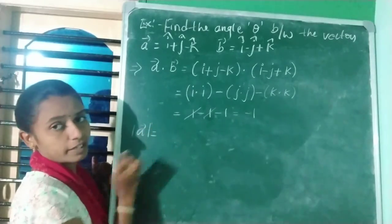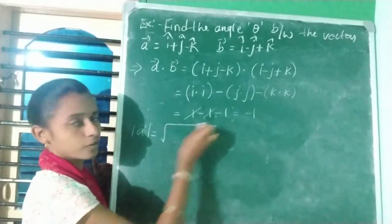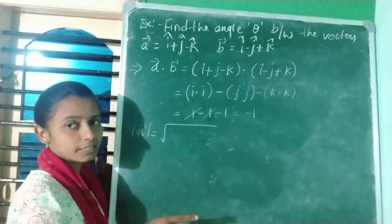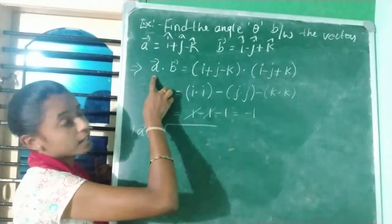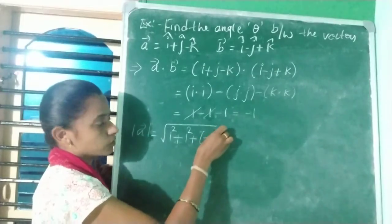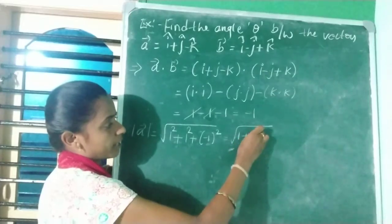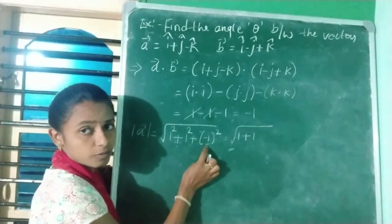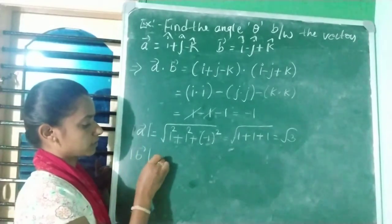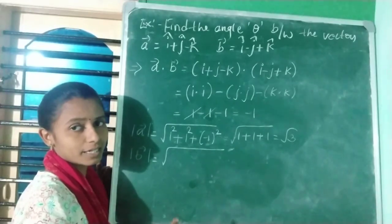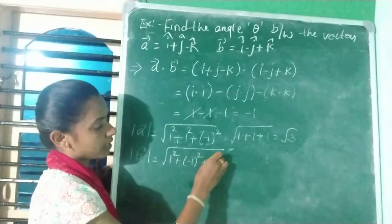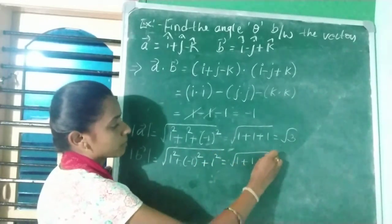Now find the magnitudes. |a| = √(1² + 1² + (−1)²) = √(1 + 1 + 1) = √3. Similarly, |b| = √(1² + (−1)² + 1²) = √(1 + 1 + 1) = √3. The magnitude of both vectors is √3.